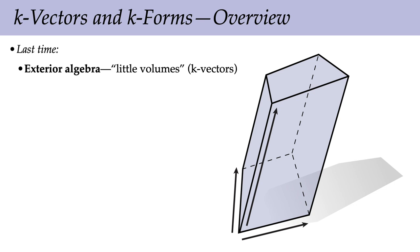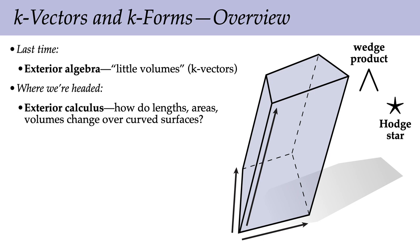Just to give a little bit of an overview: last time we introduced exterior algebra, which is a language that lets us build up and talk about little volumes or K-vectors. We had two basic operations: the wedge product, used to wedge together vectors and build up volumes, and the Hodge star, which let us specify a volume by its complement. Where we're headed next is to define exterior calculus — how do lengths and areas and volumes change over curved surfaces. Exterior calculus is going to be our essential language for talking about geometry and also for connecting geometry to physics.